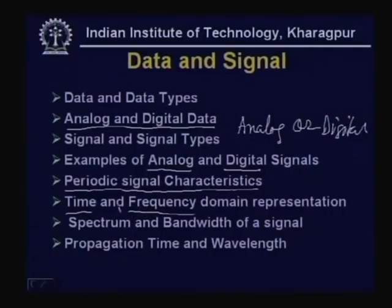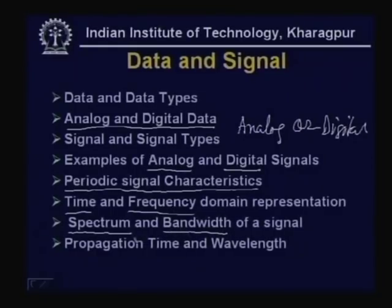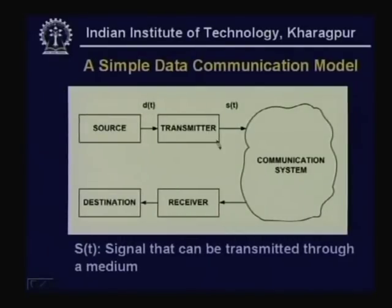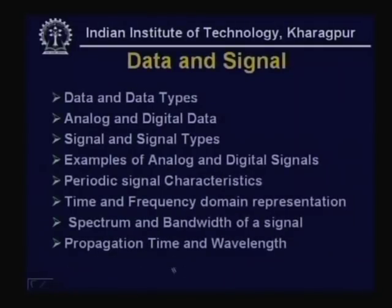We shall discuss time domain and frequency domain representations, and in this context we have to discuss the spectrum of the signal and the bandwidth of the signal. We shall discuss both and see the relationship between the two. When a signal is generated it has to be propagated, and as it goes from the transmitter to the receiver through the communication system, there will be some propagation time. The wavelength of the signals that can be sent will depend on the medium being used.